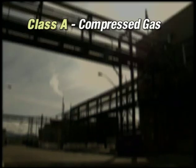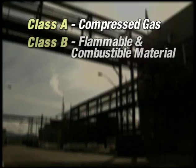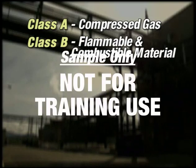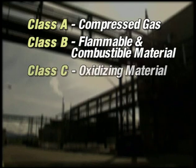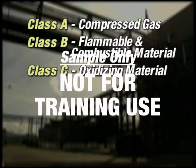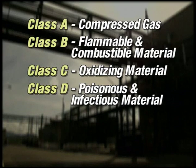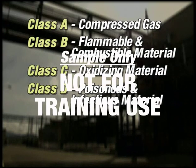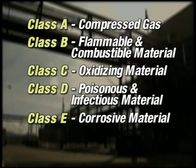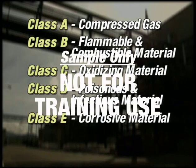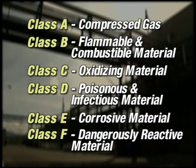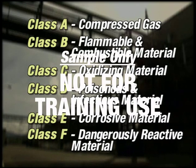WHMIS requires controlled products to be classified into one or more of six classes. These classes are Class A, Compressed Gas; Class B, Flammable and Combustible Material; Class C, Oxidizing Material; Class D, Poisonous and Infectious Material; Class E, Corrosive Material; and Class F, Dangerously Reactive Material.